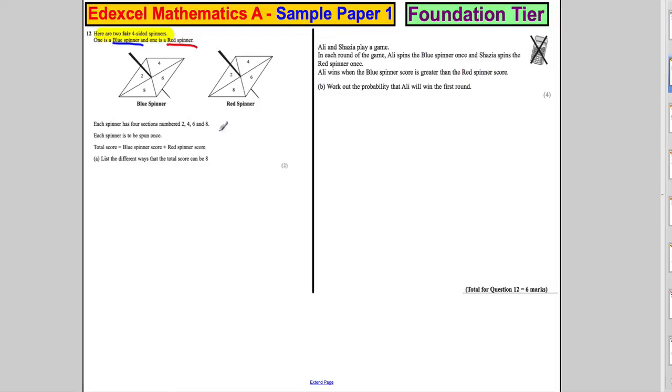List the different ways that you can get eight. Imagine you've got 2 on the blue spinner - what would you need on the red spinner? You would need 6. If you've got 4 on the blue spinner, you would need 4 on the red spinner. And if you've got 6 on the blue spinner, you would need 2.